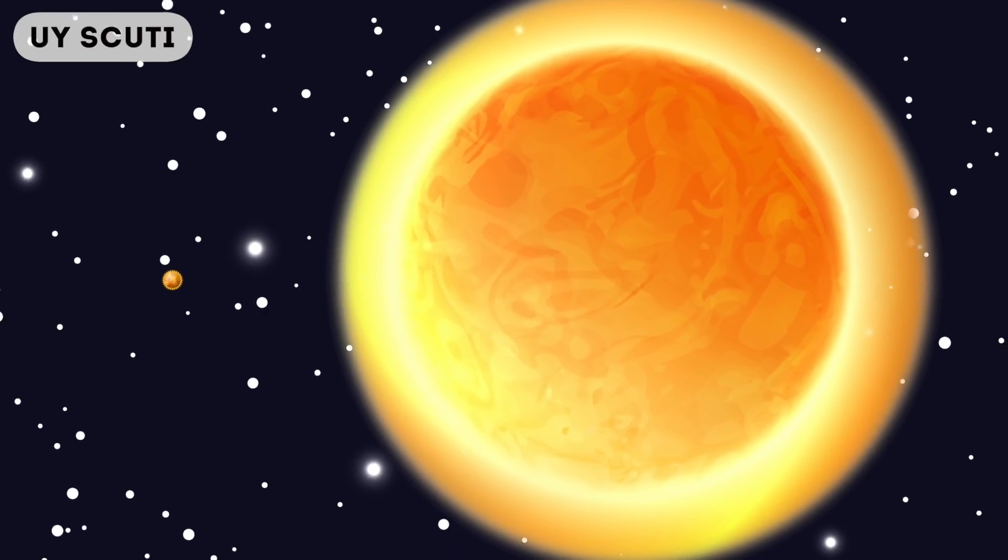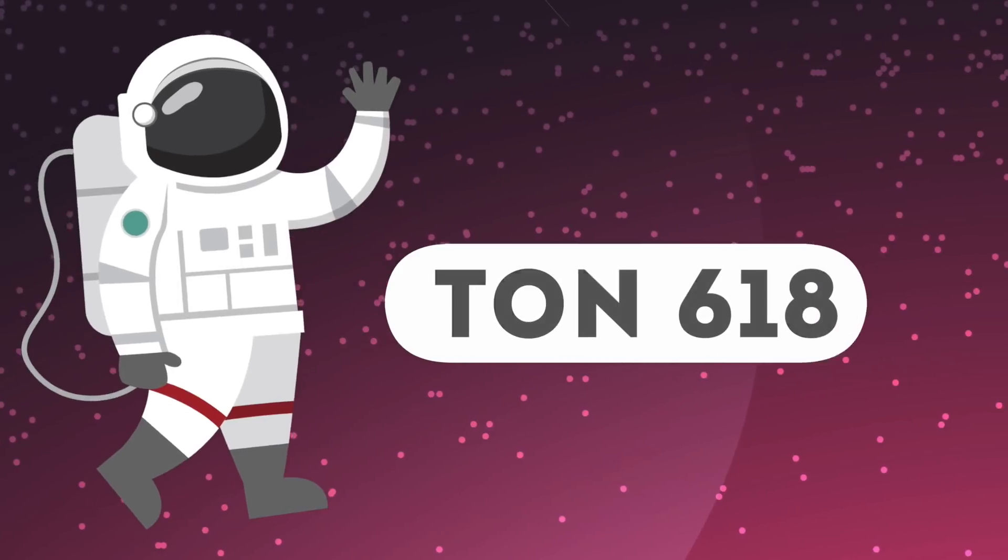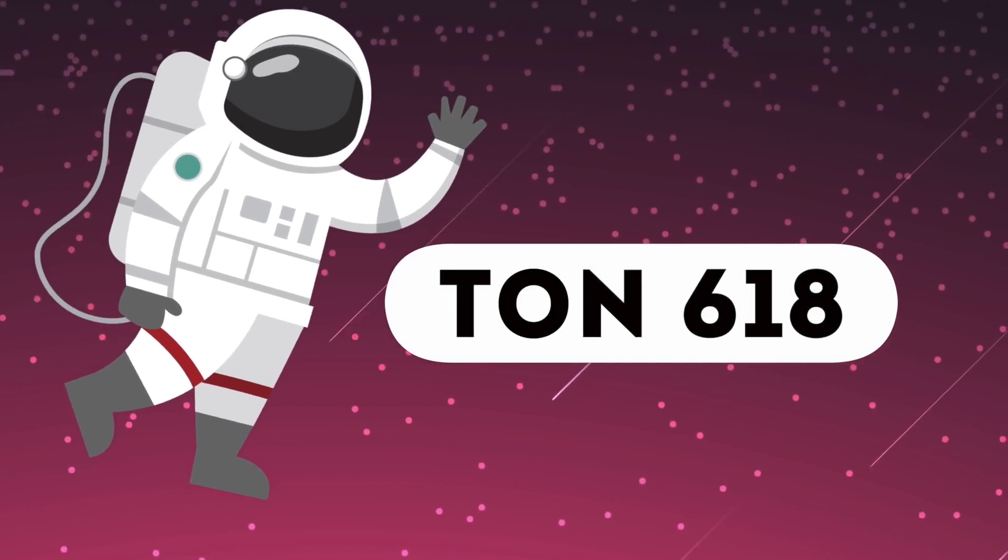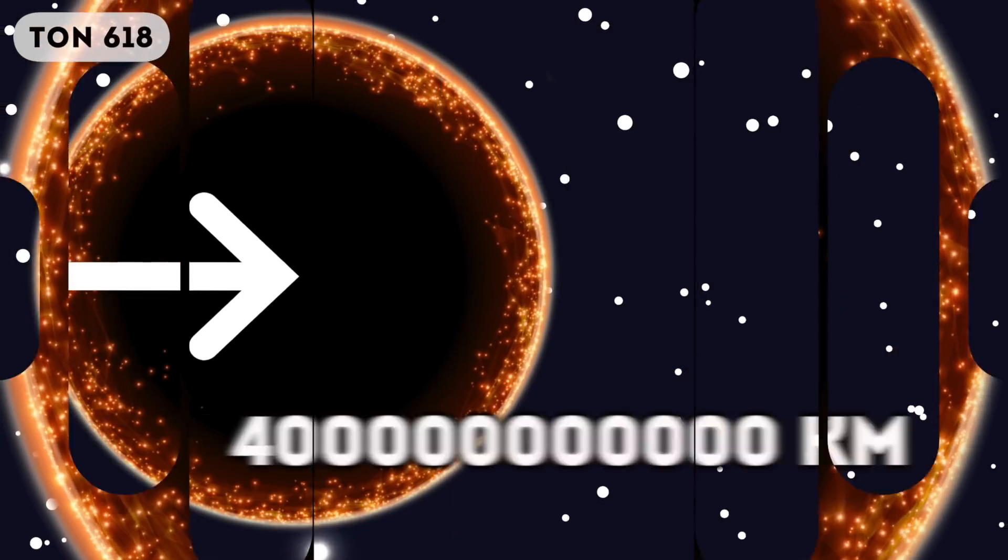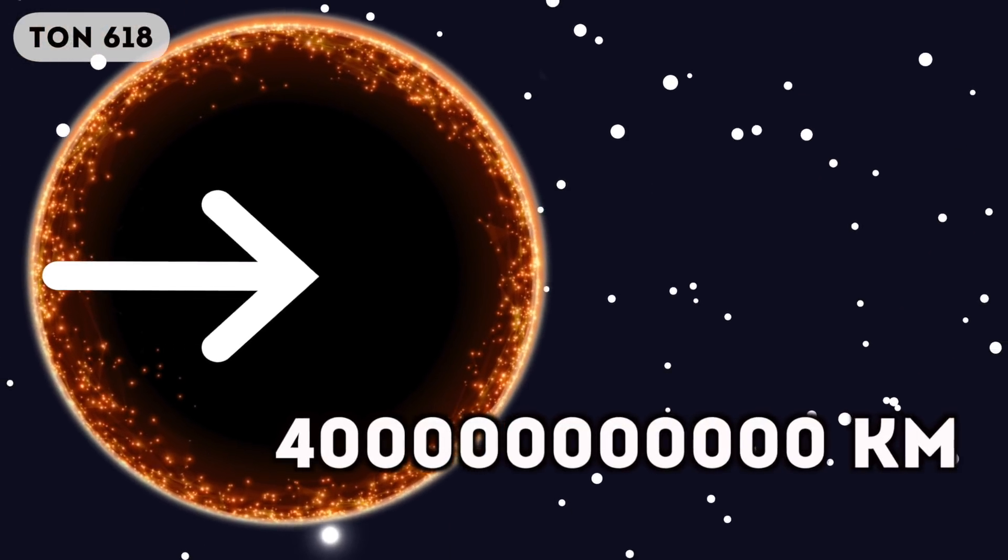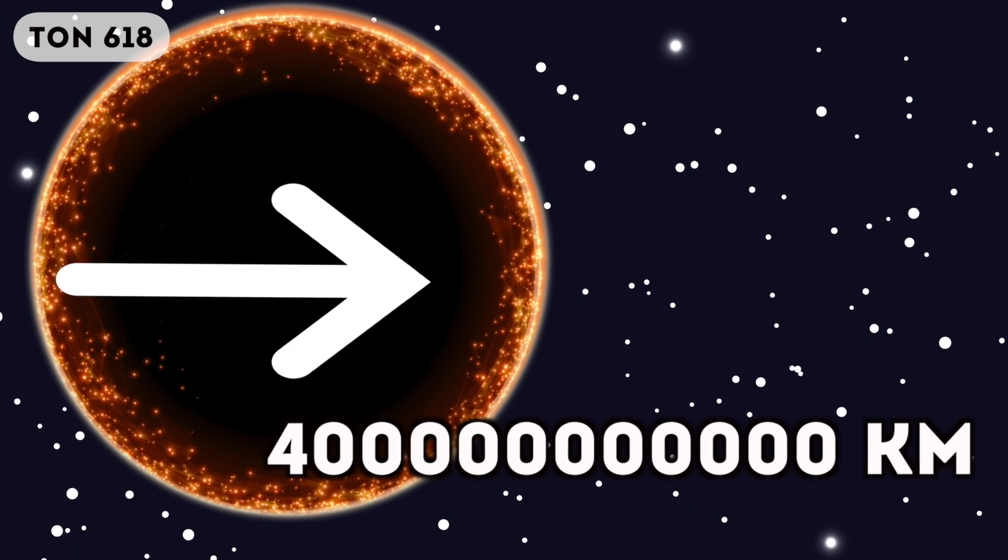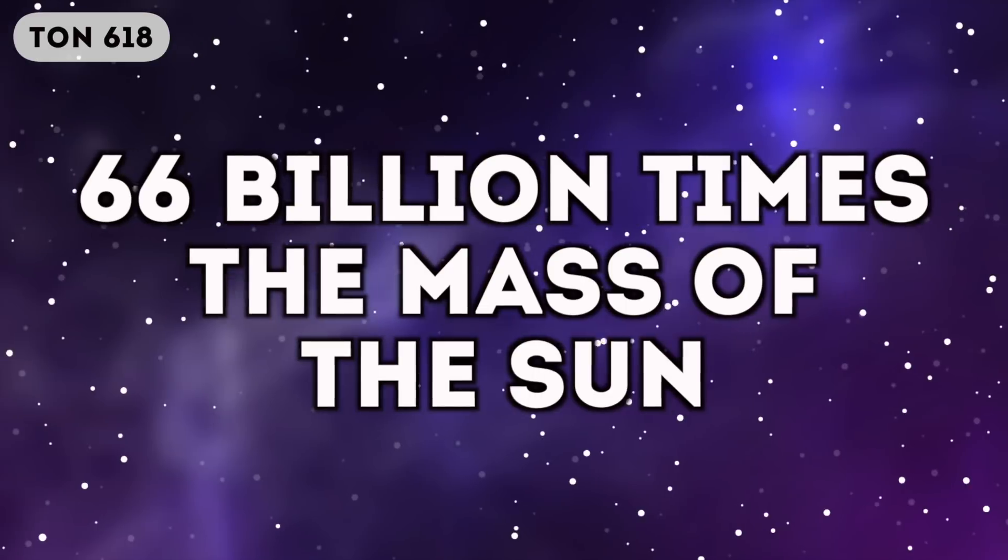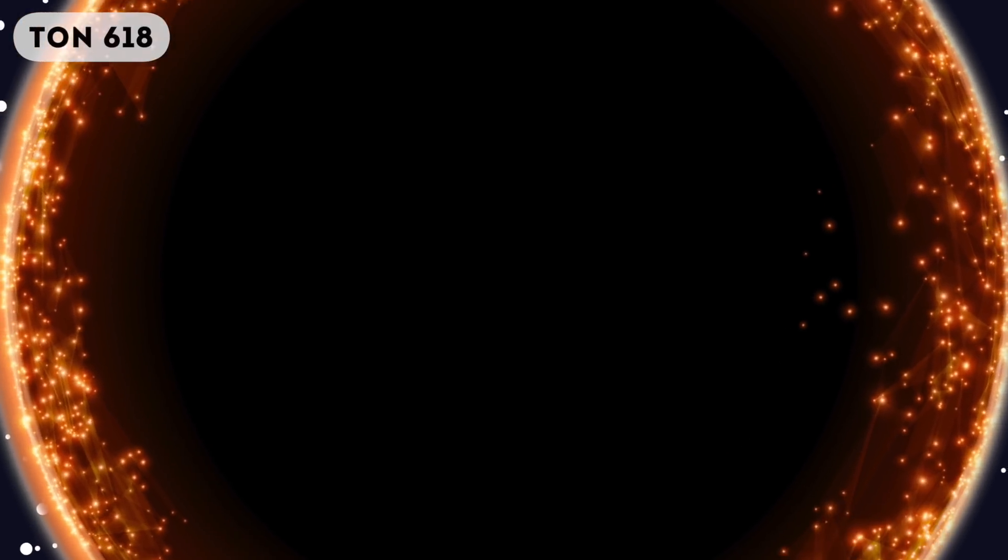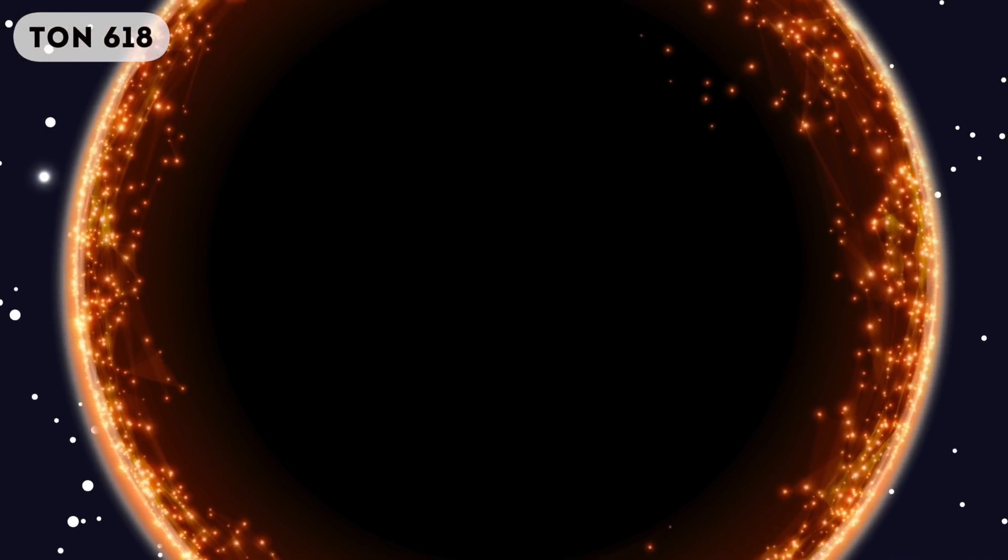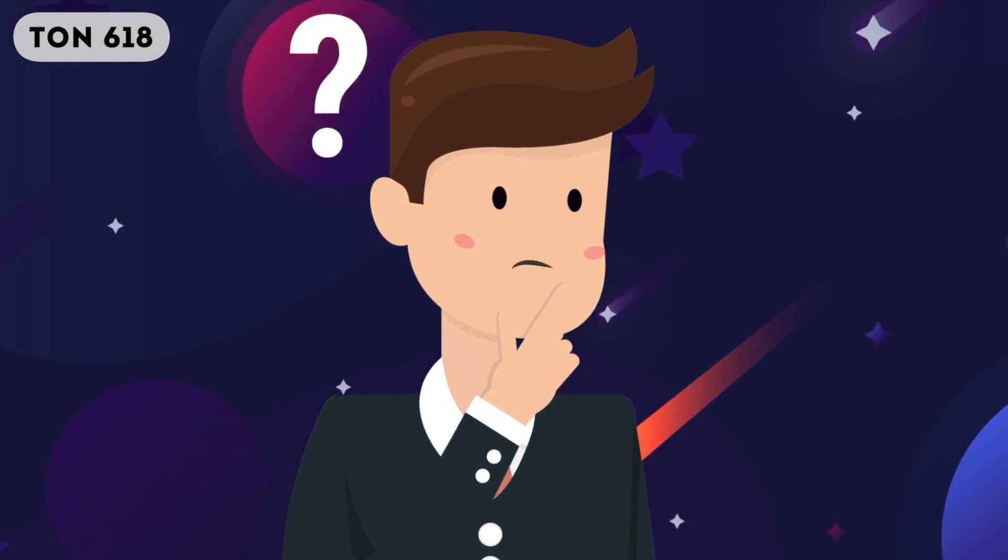Well then, let's look at TON 618. TON 618 is actually a black hole, but it's classified as a supermassive black hole. The diameter of this black hole is 400 billion kilometers. It's pretty impossible to even imagine anything that big, but to put it into perspective, it weighs 66 billion times the mass of the Sun. But thankfully, we humans don't have to worry about getting sucked into this black hole. That's because it's around 10.5 billion light years away from Earth.